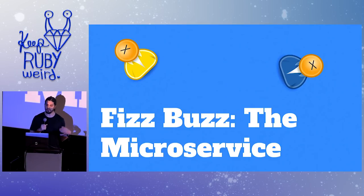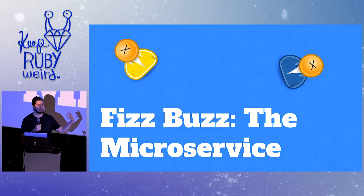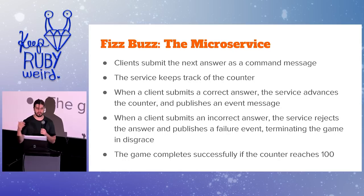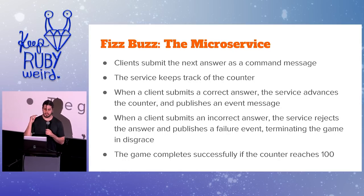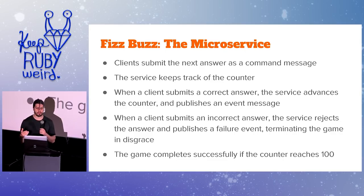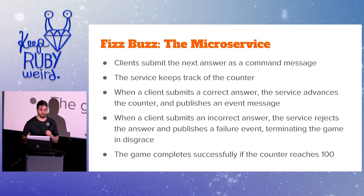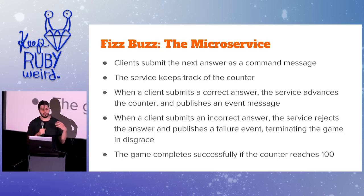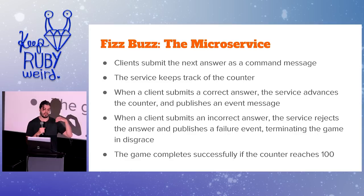So that's the model for a FizzBuzz microservice. Instead of having one program count from one to 100, we're going to simulate having different players or different clients. The clients of the microservice — whether that's another microservice, a web frontend, or something like that — will submit the next answer. The service will keep track of the game counter, and whenever a client submits a correct answer, the service advances its counter internally and publishes an event message. When a client submits an incorrect answer, the service rejects that turn. These command messages and event messages form the API or interface of this service.